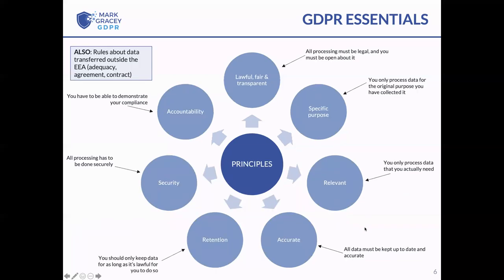The rules about what you can and can't do with data are governed by seven principles under GDPR. The first is lawfulness, fairness, and transparency — it should never be a surprise to any individual to find their data is being processed in a particular way. The second is purpose limitation — you should only process data for the specific purpose you need it, and if you want to use it for something else, you must consider whether it's lawful and assign a lawful basis accordingly.